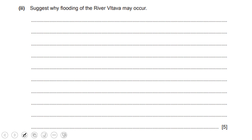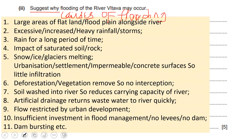Suggest why flooding of the River Vltava may occur. In questions like this, you need to describe the causes of flooding. Causes include: heavy and excessive rainfall, large areas of flat land along flood plains, and prolonged rainfall over a long period of time.